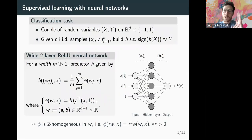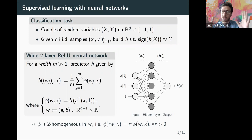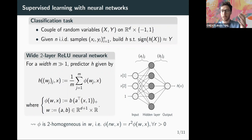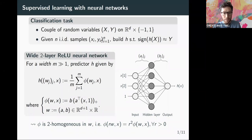We consider a classification task in this talk. The input variables x are in R^d, where d is the dimension of the input space, such as images or sounds. The outputs y are in {-1, +1} because we are doing a classification task, and the goal is to have a predictor that predicts the correct sign of y given n i.i.d. samples from the training set.